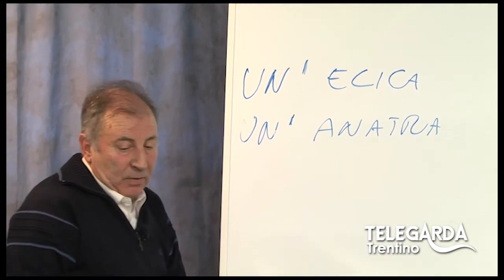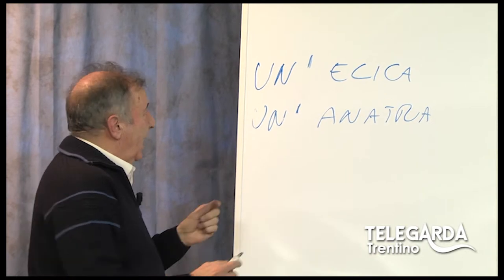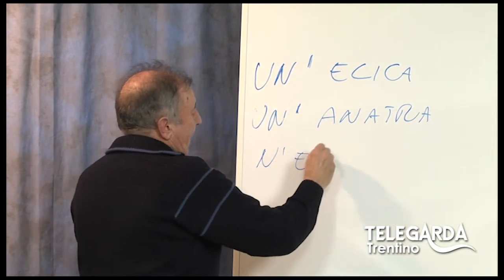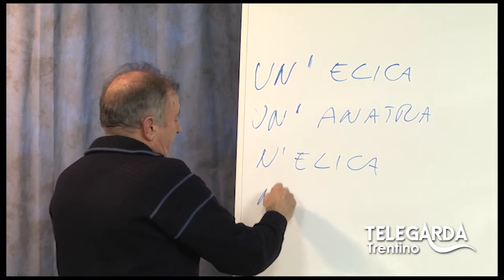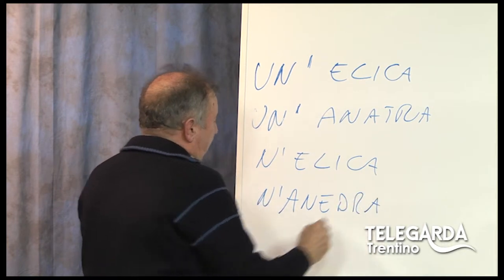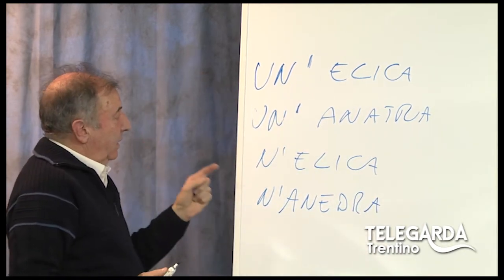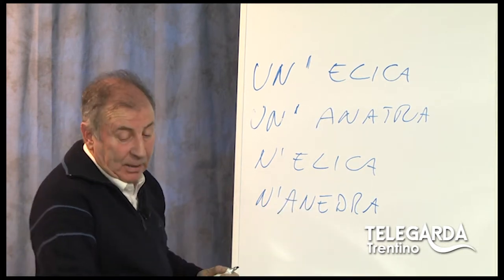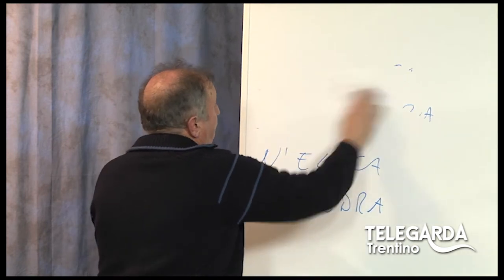In dialetto "un'anatra" diventerebbe "nanedra", e "un'elica" diventa "nelica". Vedete che non cambia praticamente niente — è cambiato solo il modo di scrivere una parola. Ma l'apostrofo può sostituire anche più lettere.